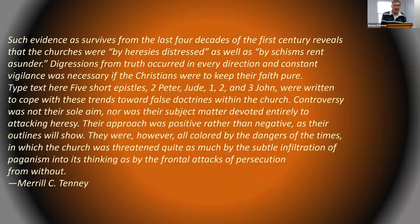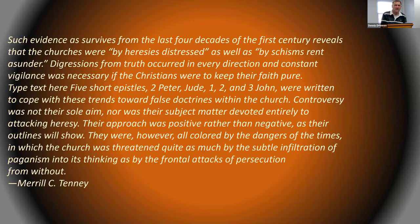Such evidence as survives from the last four decades of the first century reveals that the churches were distressed by heresies, as well as by schisms. Digressions from truth occurred in every direction and constant vigilance was necessary if the Christians were to keep their faith pure. Five short epistles — 1 and 2 Peter, Jude, 1, 2, and 3 John — were written to cope with these trends toward false doctrines within the church. Their approach was positive rather than negative, all colored by the dangers of times in which the church was threatened by the subtle infiltration of paganism.